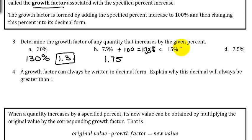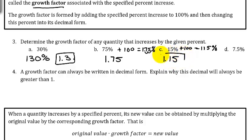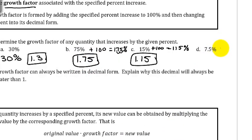For 15%, add 100 to get 115%, and converting that to a decimal gives 1.15. For 7.5%, add 100 to get 107.5%. Moving the decimal point two positions to the left gives us 1.075.